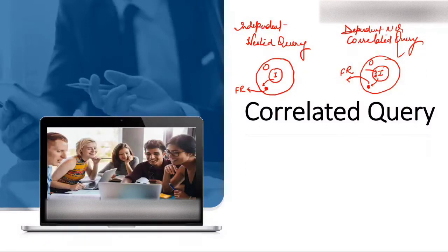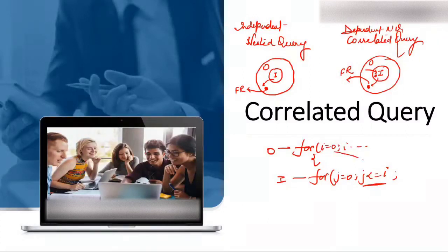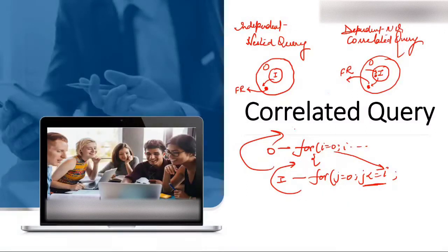The main difference between correlated query and nested query — consider the matrix program example. In a matrix, you use nested loops: for i = 0 and then a j loop for j = 0, where j is less than or equal to i. The inner loop depends on the value of the outer loop. The inner loop takes the value of the outer loop, processes it, gives its value back, and the outer loop finally gives the result. Correlated query works in a similar fashion.